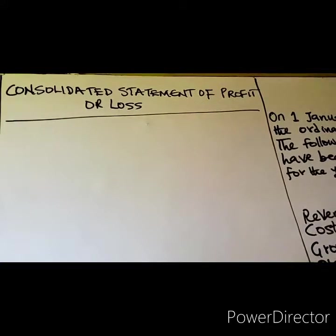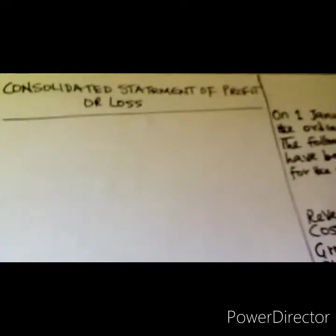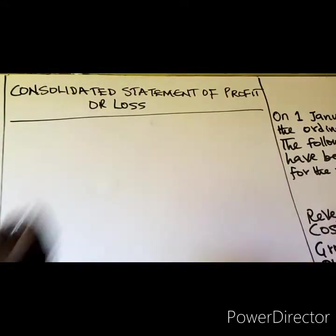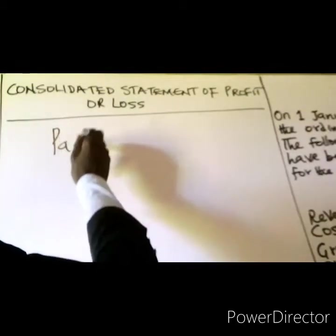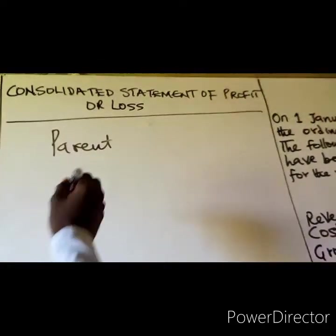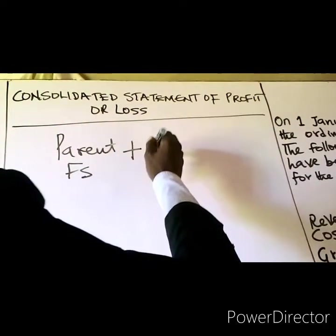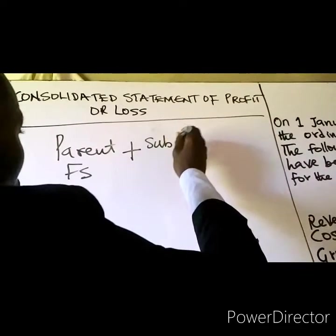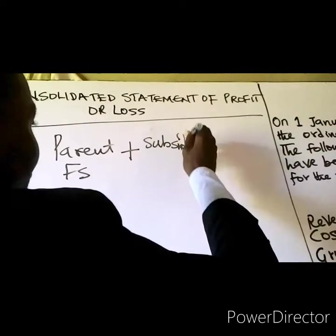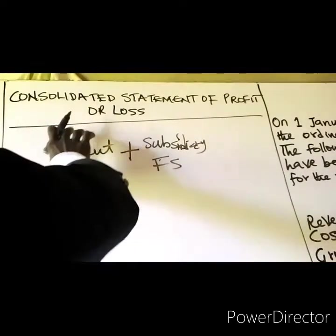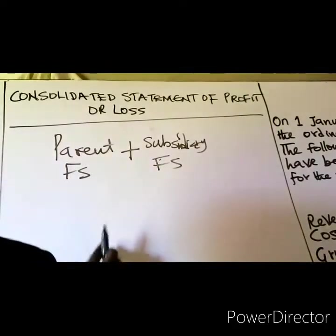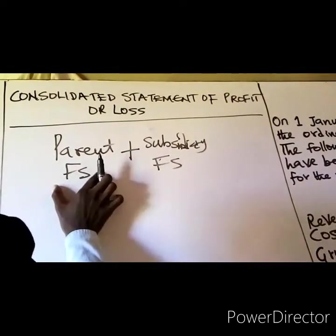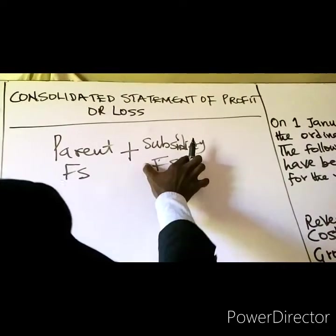The consolidated statement of profit or loss follows these basic principles. When you are preparing it, you'll be adding line by line the individual items in the parent company's financial statement and that of the subsidiary's financial statement.